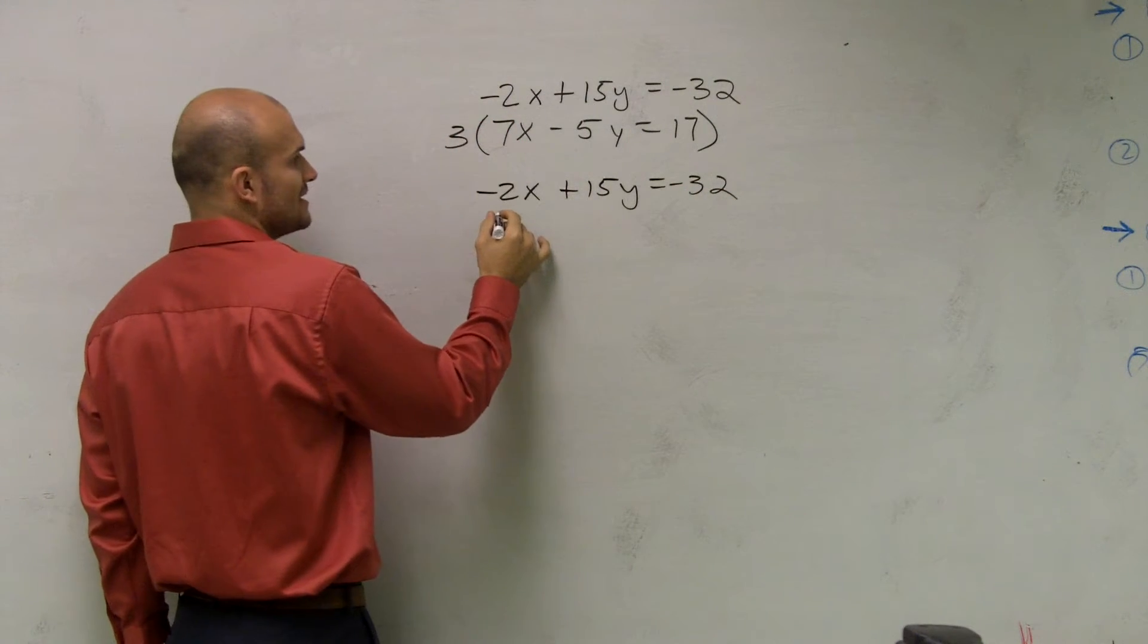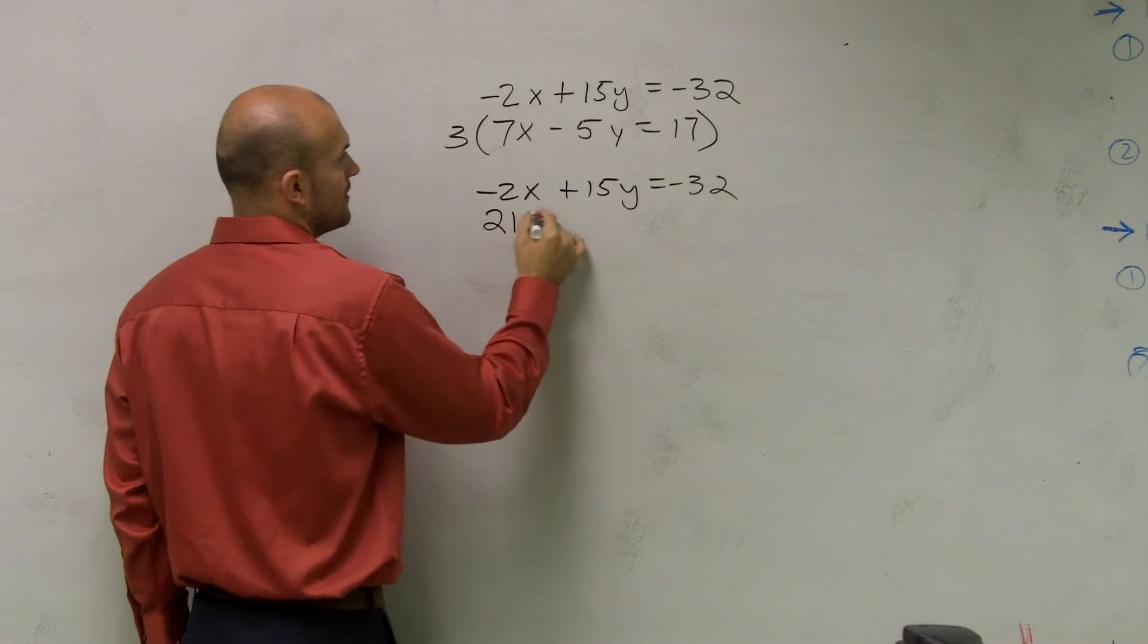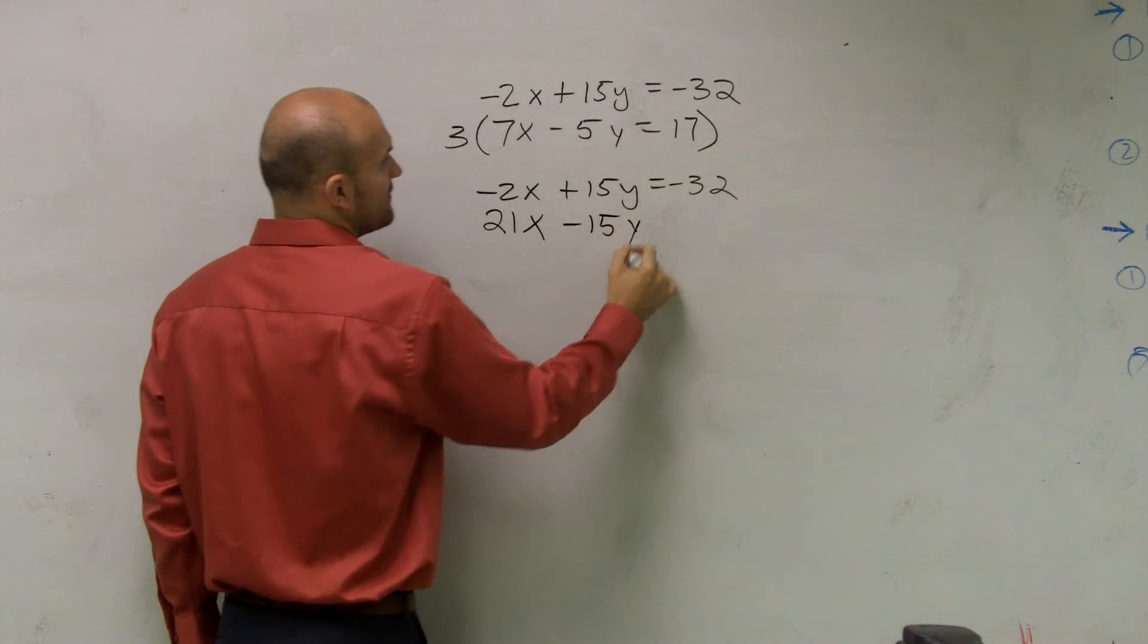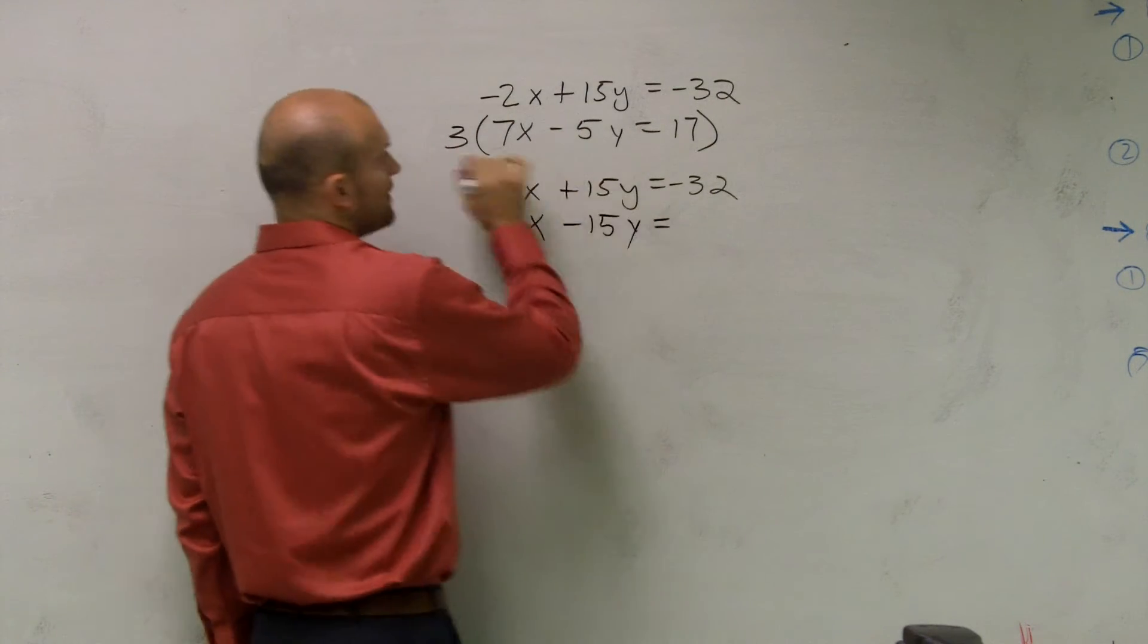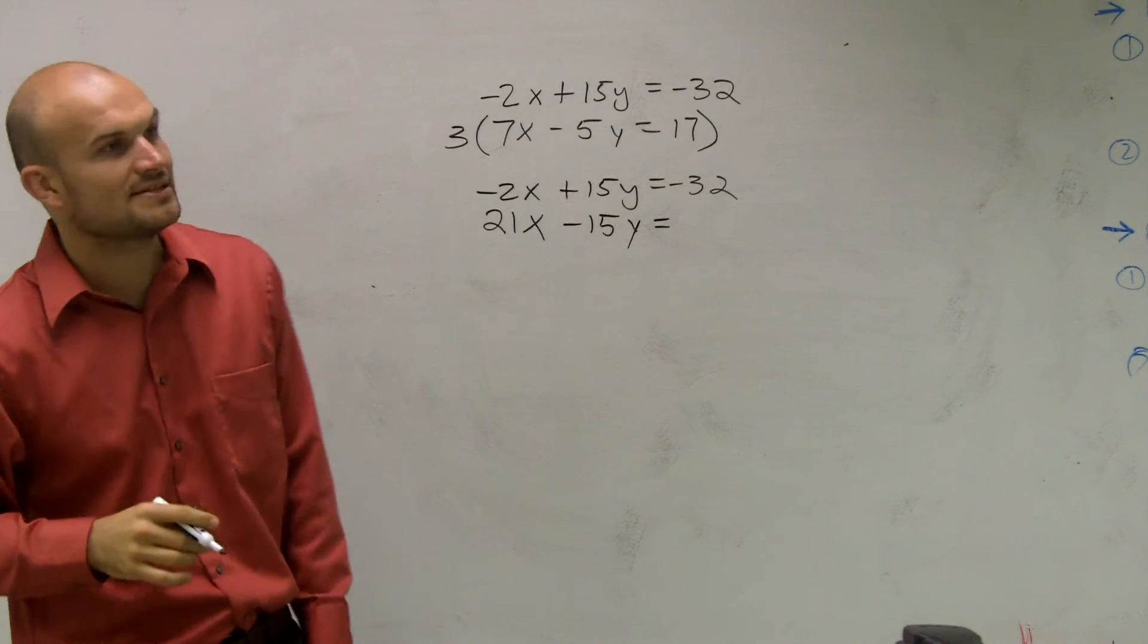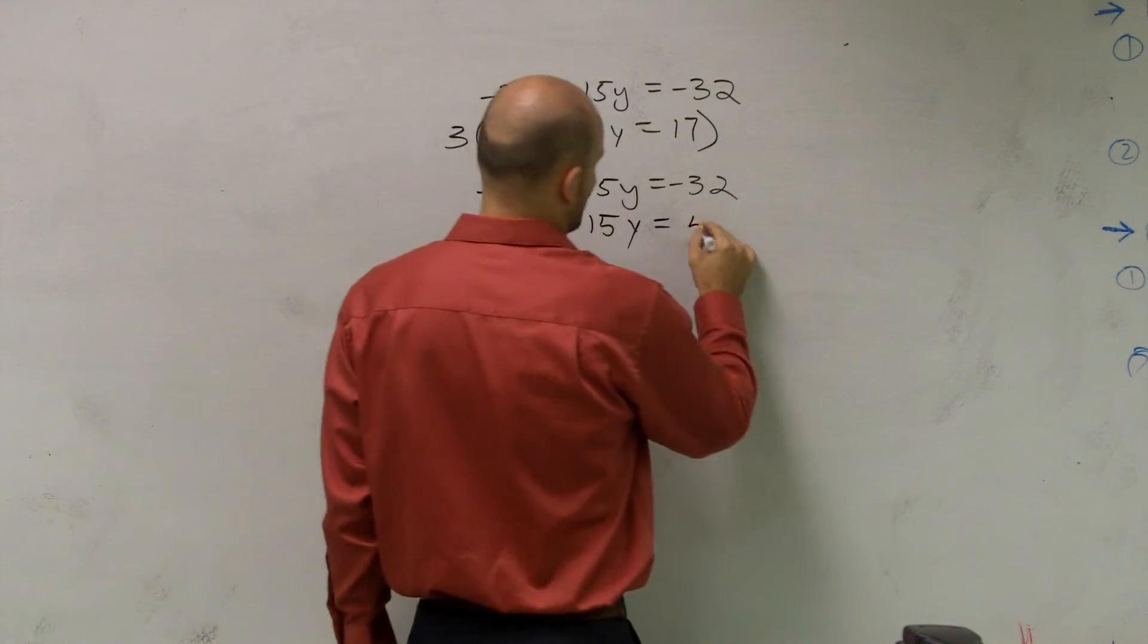3 times 7x is 21x. 3 times negative 5y is negative 15y. And 3 times 17 is going to be 51.